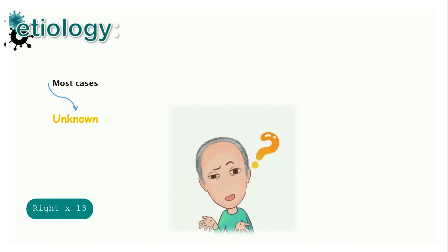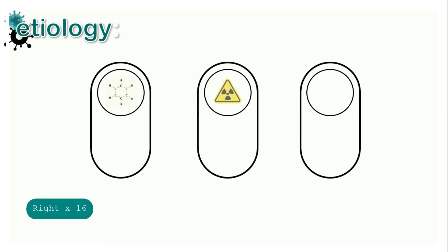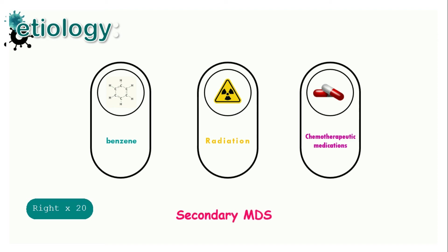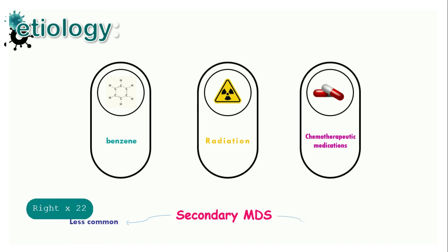In most cases, the cause of myelodysplastic syndrome is unknown or idiopathic. When this happens, it is classified as primary MDS. Secondary MDS is less common but has a poorer prognosis than primary MDS, as it tends to be resistant to treatment, has more cytogenetic abnormalities, and evolves into AML more frequently. Secondary MDS can occur at any age.